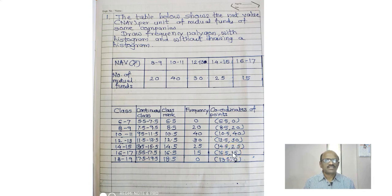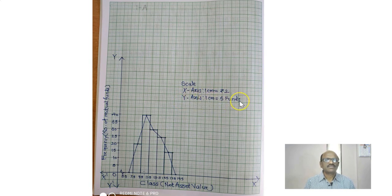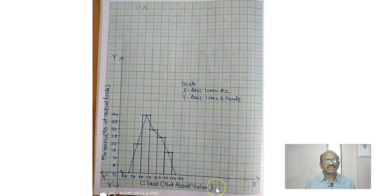Now see the graph. On the x-axis, 1 cm equals 2 units, and on the y-axis 1 cm equals 5. The classes are 5.5 to 7.5, 7.5 to 9.5, and so on. The x-axis shows net asset value and the y-axis shows the number of mutual fund companies.